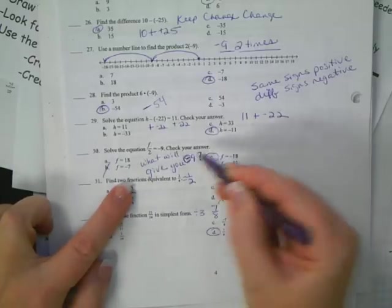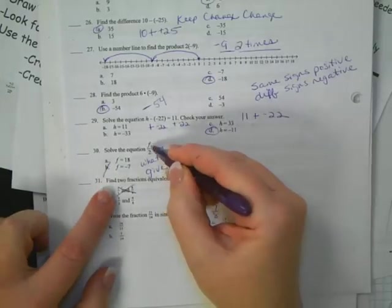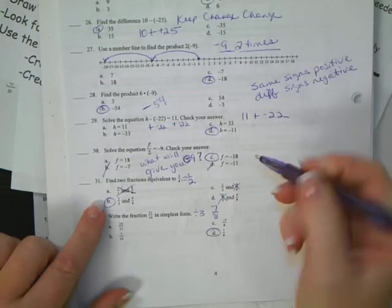Alright, number 32. The fraction 21/24ths and simplest form on divide by 3 and get 7 eighths. So make sure you know how to do that.